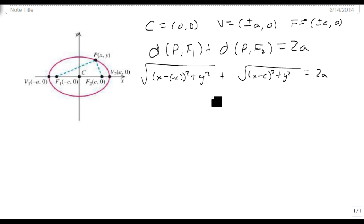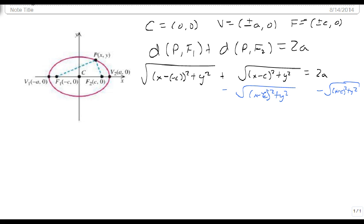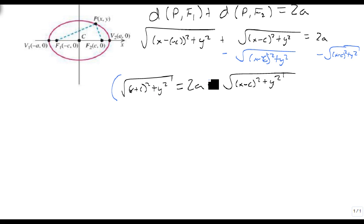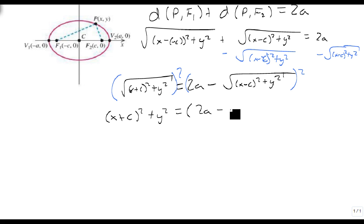We're going to make this a plus c rather than a minus, since that's just easier, and subtract the second radical over to the other side. So now we get the square root of (x + c)² + y² equals 2a minus the square root of (x − c)² + y². Now we're ready to square both sides, giving us (x + c)² + y² equals [2a minus the square root of (x − c)² + y²]².